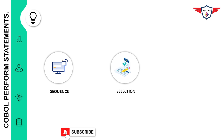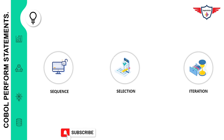The selection structure provides a choice between two functions based on a condition, and for that you need a COBOL IF-ELSE statement or probably a COBOL EVALUATE statement. And finally, you have the iteration structure, which executes a function or piece of logic continuously as long as a condition is satisfied. For example, you can use a PERFORM UNTIL statement to execute a piece of logic continuously until the condition is satisfied.